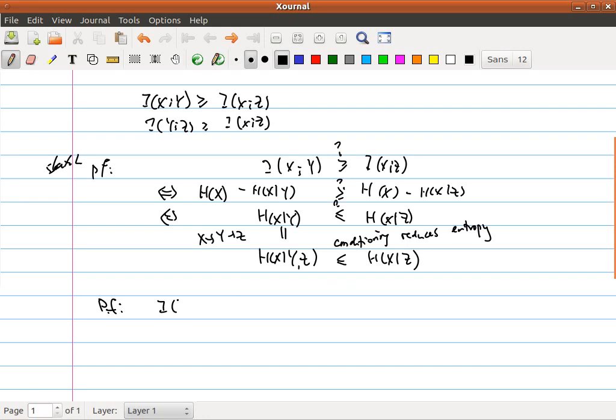Basically, I can write I(x;y) is equal to H(x) - H(x|y). And this, however, will be equal to H(x) - H(x|y,z). That's because of the Markov chain.